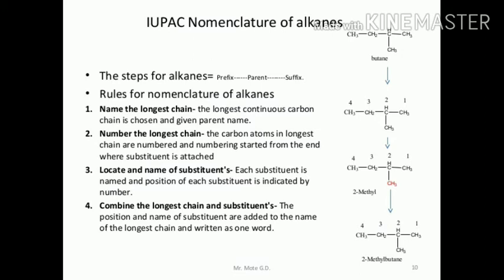It is explained by the example of butane. First step — the steps for naming alkanes involve three parts: prefix, parent, and suffix. Rule number one: name the longest chain. The longest continuous carbon chain is chosen and given a parent name, such as 1-2-3-4 carbons means butane.